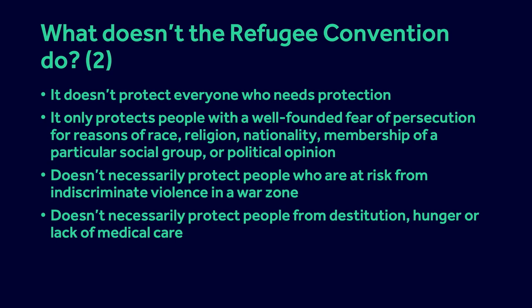The Refugee Convention also doesn't protect a lot of the people who need protection, because the legal definition of a refugee is quite narrow. You must have a well-founded fear of persecution for one of the five convention reasons. A person at risk of imminent death because their country is a war zone isn't necessarily a refugee in law. Nor is a person watching their children starve in a famine-struck country, nor is a person dying of a treatable illness because they're too poor to afford treatment. These are gaps in the protection provided by the Refugee Convention.